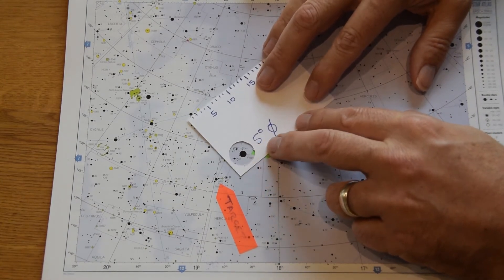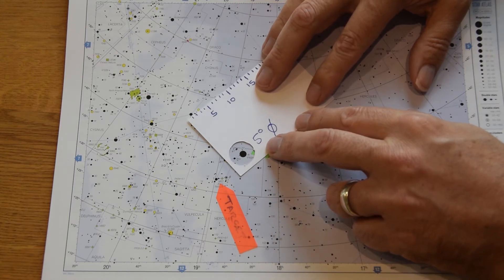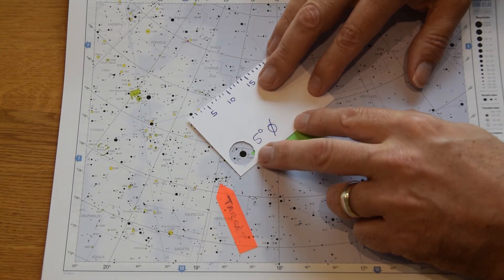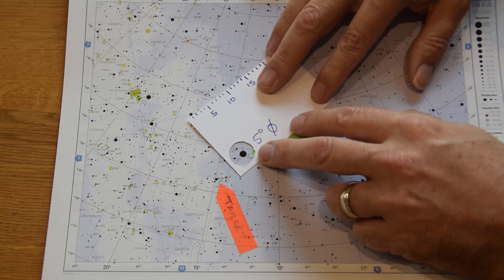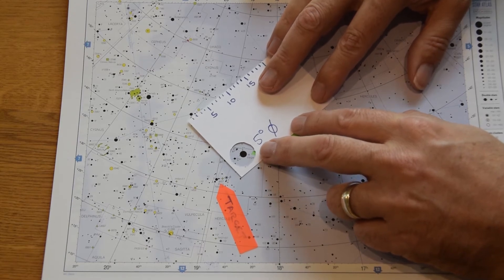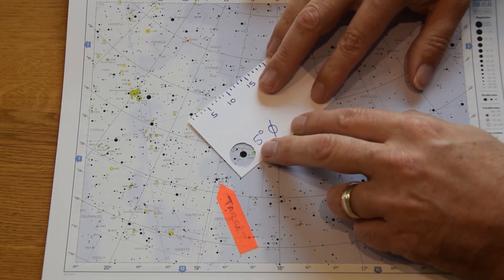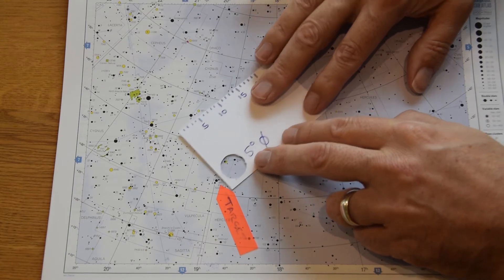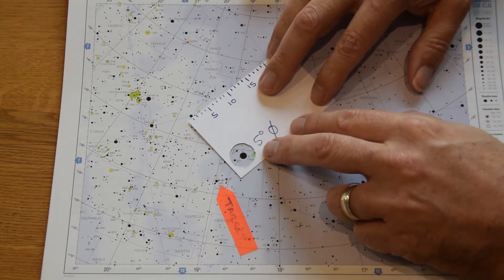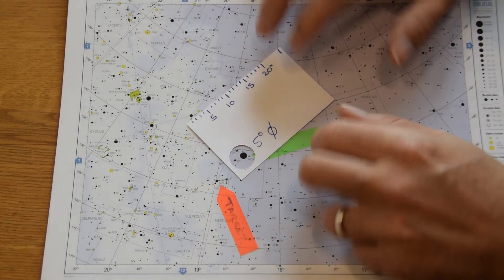Now the finderscope of course, unless you've got a corrected finderscope, is showing you an inverted view. So what I suggest you do is look through the finderscope and then practice moving the telescope a little bit. Find out which way it's going to move to move down towards that. Maybe you want to just jiggle it by hand.